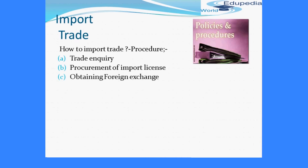To obtain sanction for release of foreign currency, the importer submits an application to a bank authorized by RBI along with a copy of the import license. If approved, the necessary amount of foreign exchange is released through the importer's bank. Next is placing an indent, or placing an order. After obtaining the required foreign exchange, the importer places an order for the goods to be imported. This order, known as an indent, contains details regarding price, quantity, grade, packing, marking details, and delivery instructions.